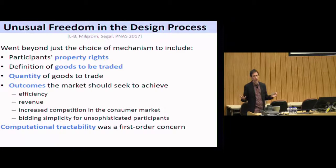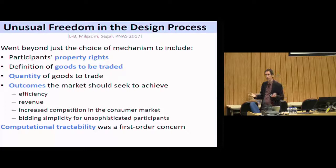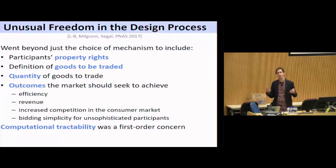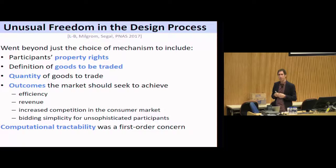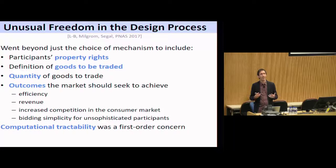This went beyond just the choice of mechanism. We had to think about things like property rights — what do people own, what rights did they have — what goods the market should actually trade, and how much it should decide to trade. Should the market care about efficiency — putting goods into the hands of parties that want them most? Or should it care about revenue, since we're talking about billions of dollars? Or downstream effects on the consumer market, like protecting new entrants to increase competition? Often these objectives pull directly against each other.